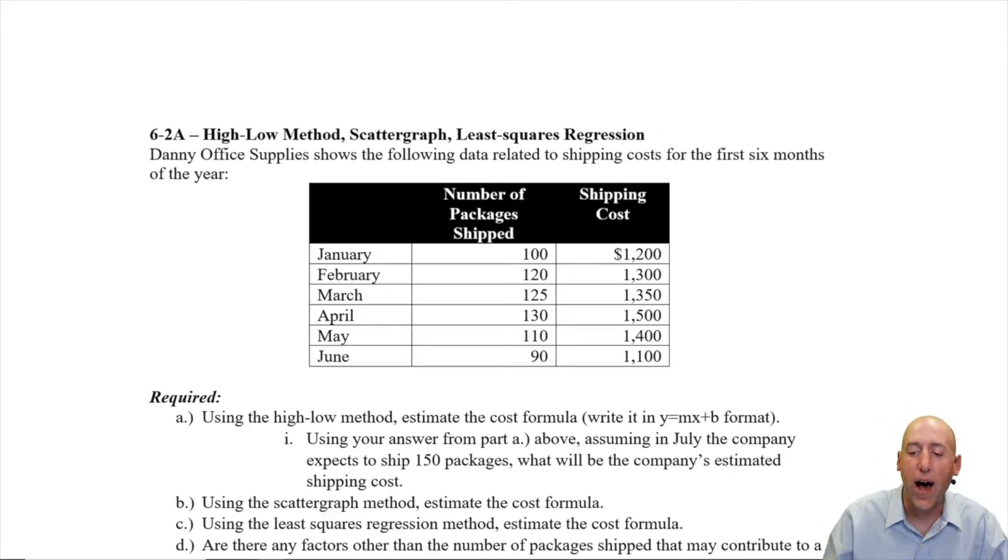So we'll start with the high-low method. So here we have this example. Danny Office Supply shows the following data related to shipping costs for the first six months of the year. And there's January through June, there's the number of packages and the shipping cost. The question asks, using the high-low method, estimate the cost formula for this scenario.